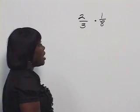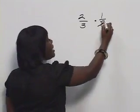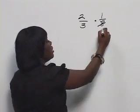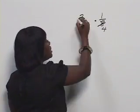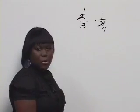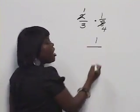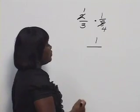Therefore, we want to simplify by dividing both 8 and 2 by 2. 8 divided by 2 gives us 4. 2 divided by 2 gives us 1. Now, we can multiply straight across. 1 times 1 is 1. 3 times 4 is 12.